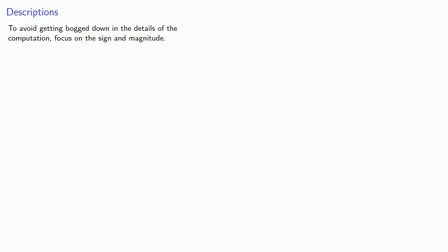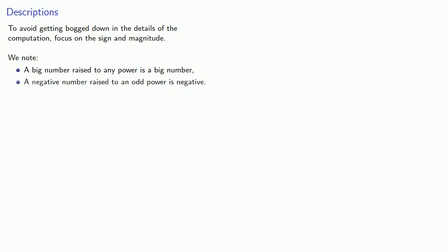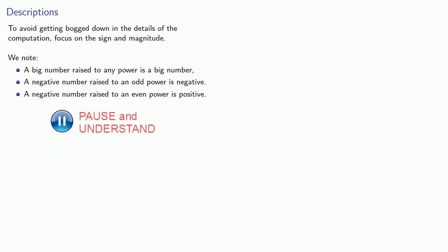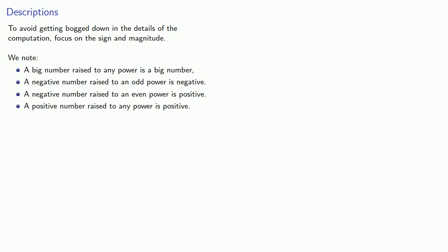To avoid getting bogged down in the details of the computations, we can focus on the sign and magnitude, and make a couple of observations. First, a big number raised to any power is a big number. A negative number raised to an odd power is negative, while if it's raised to an even power, it's going to be positive. And finally, a positive number raised to any power is positive.